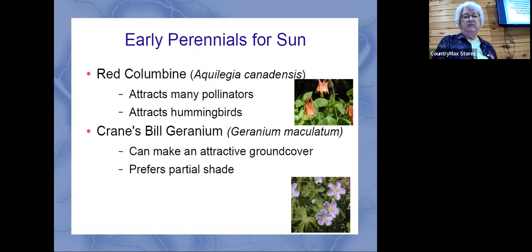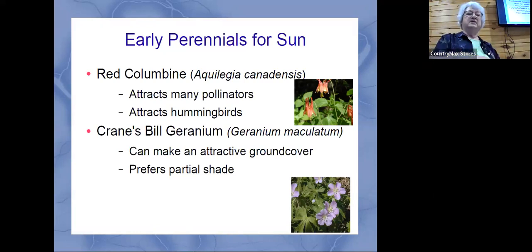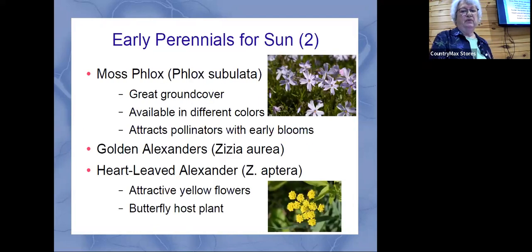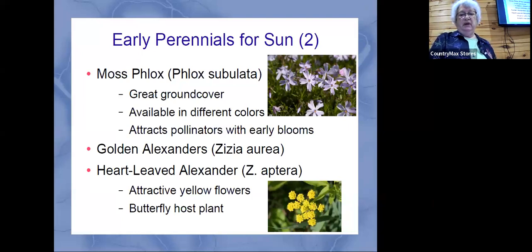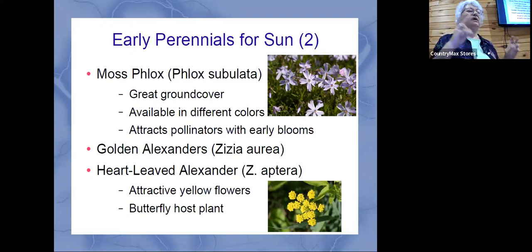Cranesbill makes a very nice ground cover — it's going to spread by itself, cover the ground, help keep soil moist, help keep weeds down, and eventually cut down on how much mulch you need. Creeping phlox is another great ground cover and it attracts pollinators. The reason to have some early-blooming perennials is that bees are waking up and the pollinators are coming — they want nectar. So that's the reason to have some early-blooming perennials in your garden.